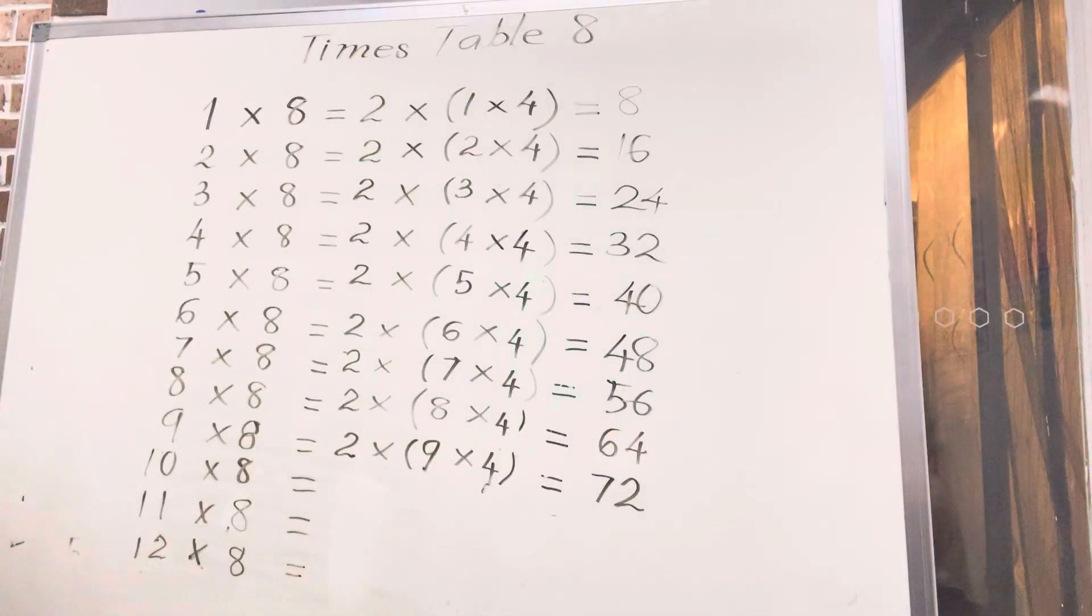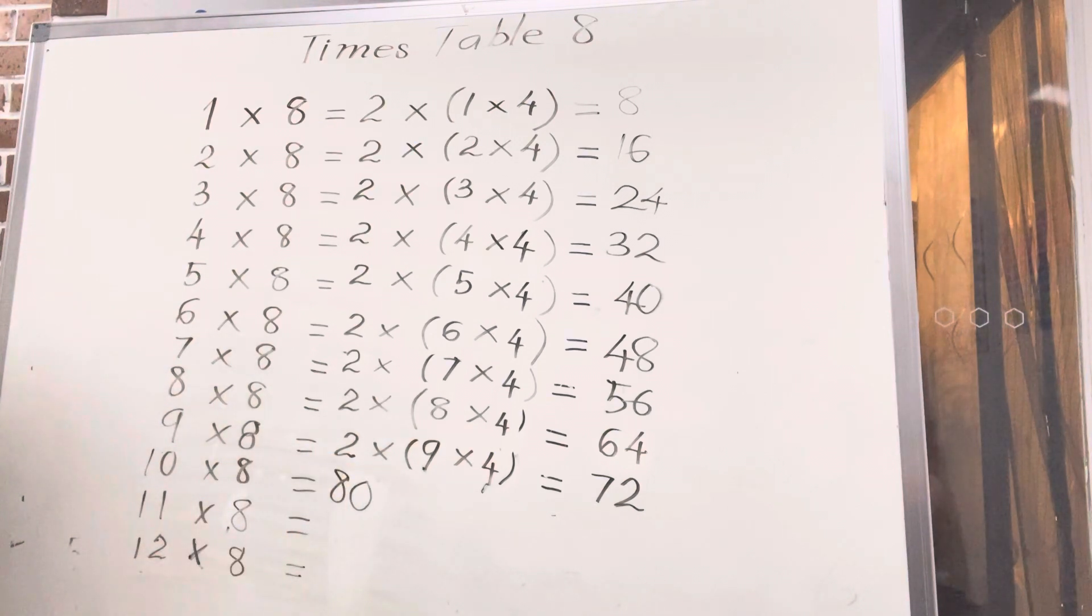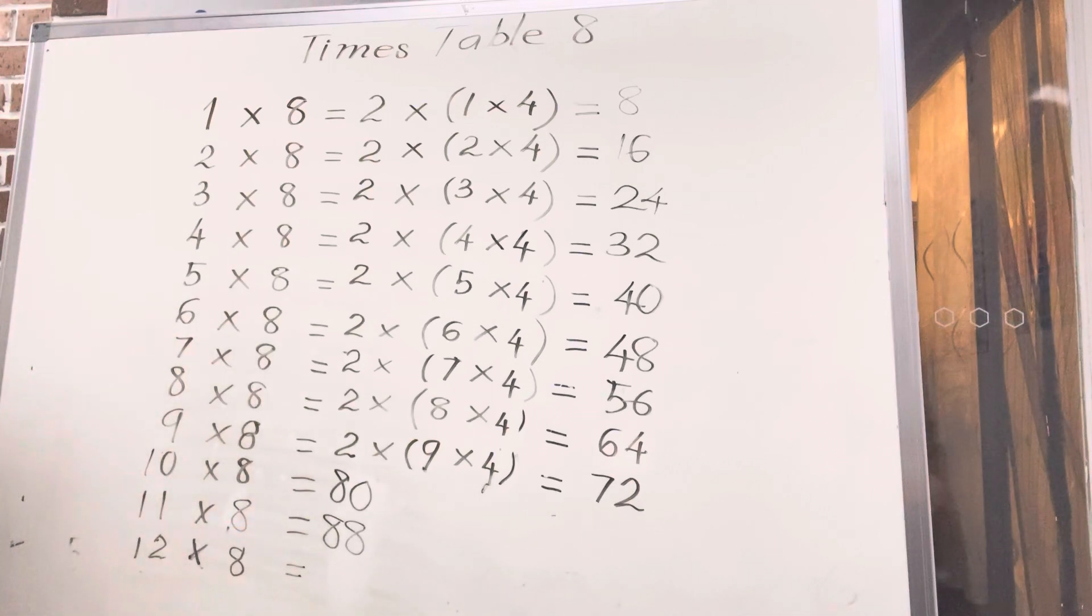Ten times eight, use the table 10, eighty. Eleven times eight, eighty-eight, times table 11. And the last one, twelve times eight, ninety-six. Yes, double 48 will be 96. Yes, very good.